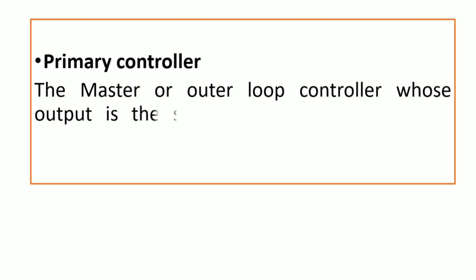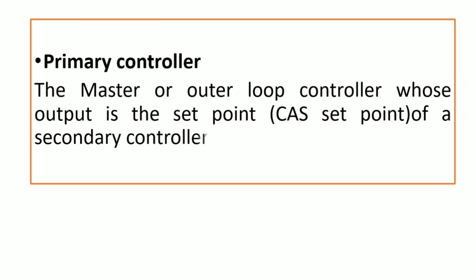What is primary controller? The master or outer loop controller whose output is the setpoint of a secondary controller in cascade control system.